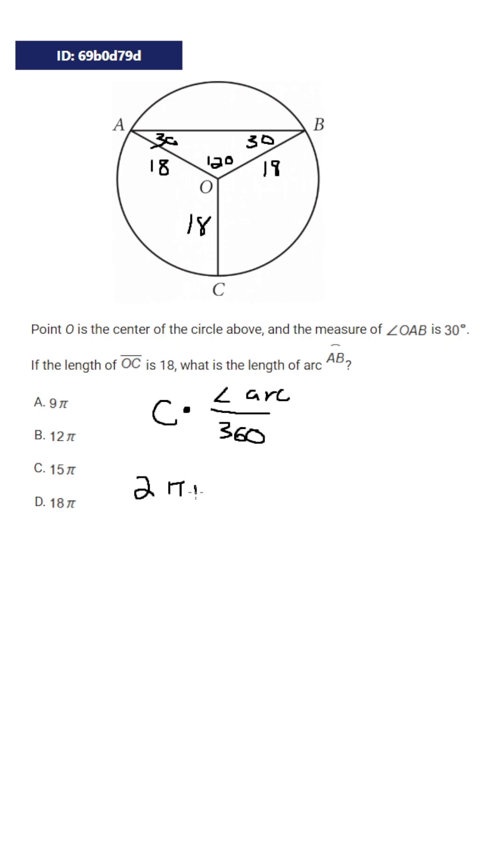That's going to be 2 pi r, and the angle of the arc is going to be this 120 degrees because it's this arc that we're talking about. So times 120 over 360, and what's 2 pi r?